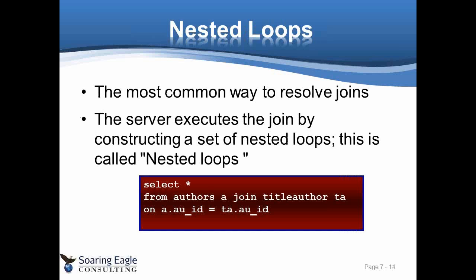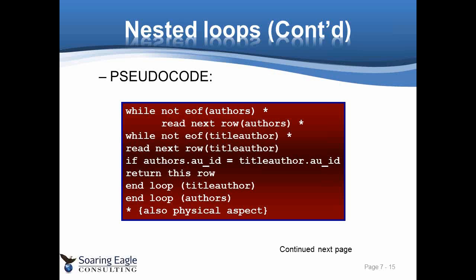The most common way of resolving joins is the nested loop, otherwise known as a nested iteration join. What the server does is create nested loops. Here's an example: we're joining the authors table to the title-author table on the author ID. We grab the first row of authors, then while not EOF title-author, we read the next row of title-authors — bringing back all matching rows from the title-authors table. When we've done that, we get the next row from the authors table. This is your nested loop join.